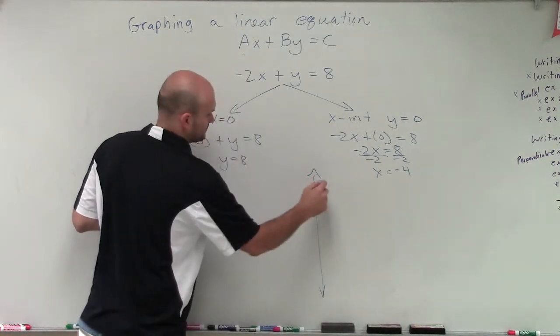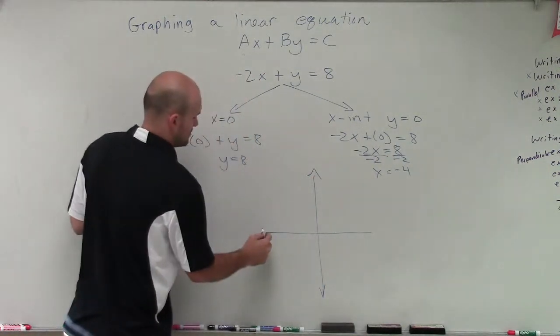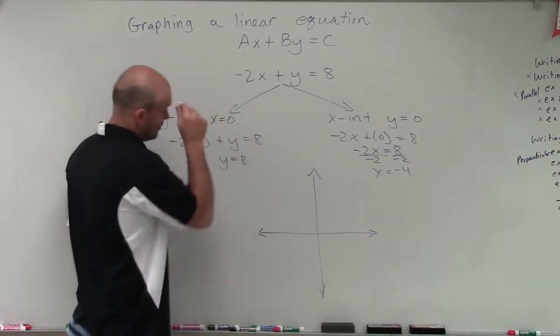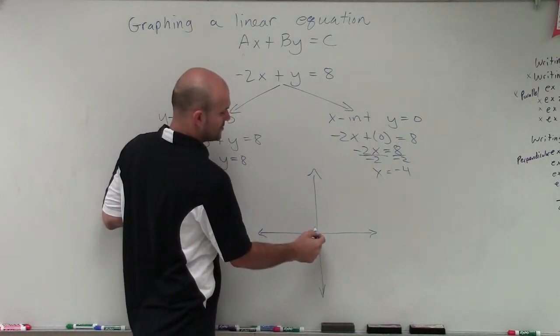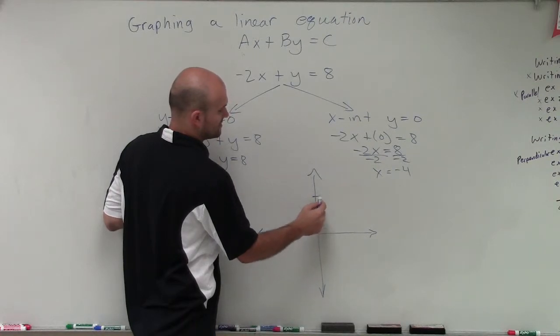Now to graph this, I have a y-intercept of positive 8. So I'll go up 8: 1, 2, 3, 4, 5, 6, 7, 8.